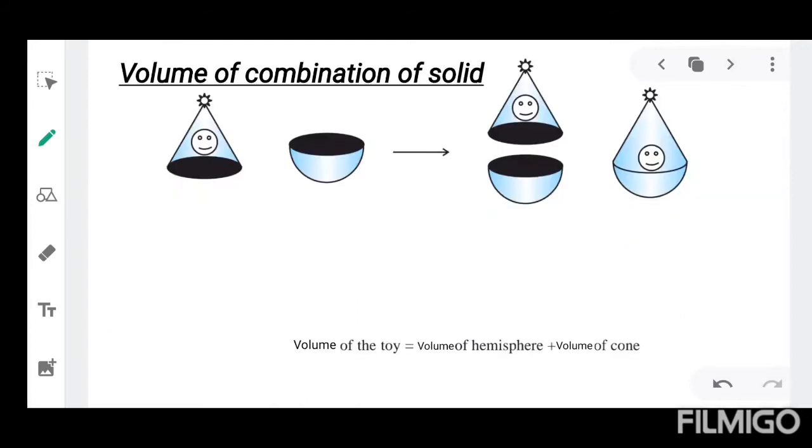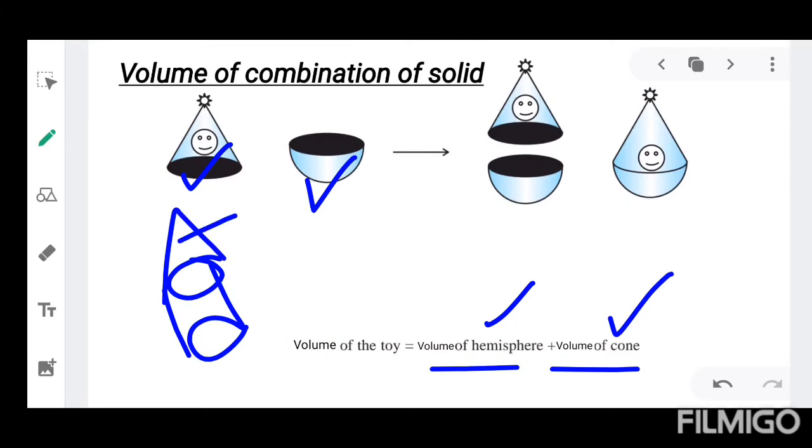Our next topic is volume of combination of solids. It is very easy than surface area. We will directly add the volume of the solids. Here we have the combination of a cone and a sphere. Just we will add the volume of the hemisphere and the cone. If it is a cylinder and a cone, we will just add the volume of cone plus volume of cylinder.